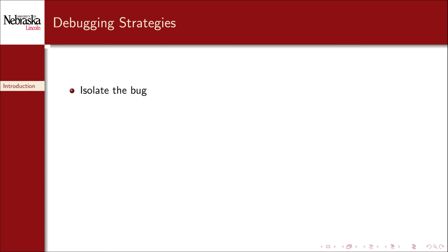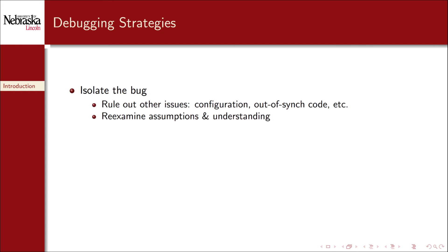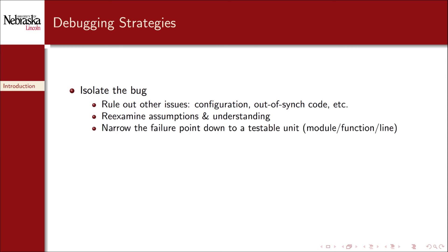Then we need to isolate the bug. We need to rule out possibilities that are external to our code, such as a configuration or system issue, or that we're not using out-of-sync code. We also need to re-examine our assumptions and understanding of the problem. If we have certain expectations about the input, such as that it's always positive, are those assumptions correct or might we need to add additional error handling? Ultimately we're trying to narrow the failure point down to a testable unit, such as an error in a module, a particular function, or a specific line of code.